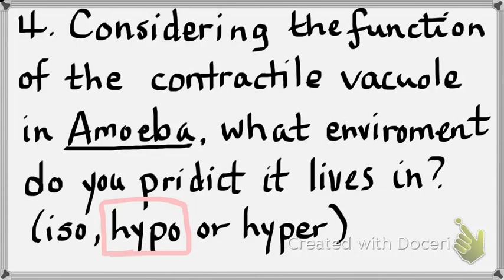Some animals can move between fresh and salt water — they have some kind of excretory organ that controls their water balance very well. The analogous organ to the contractile vacuole in us would be kidneys. Everybody is okay on question four.